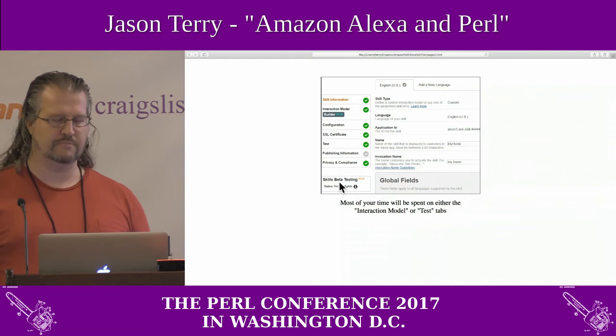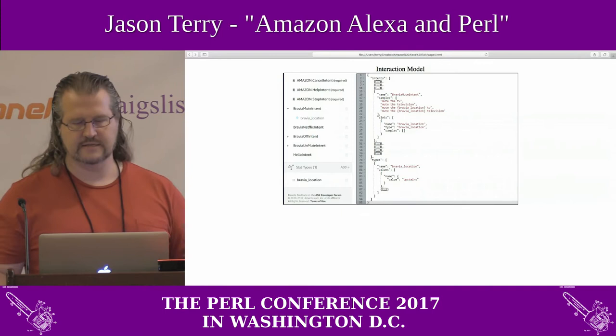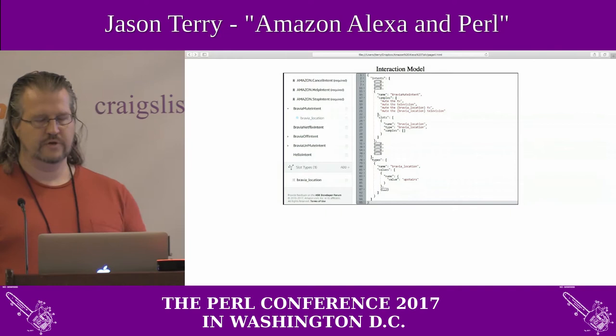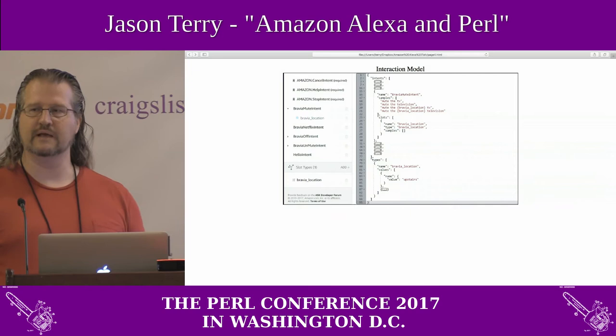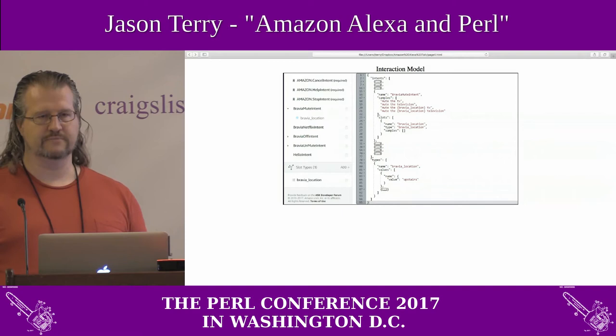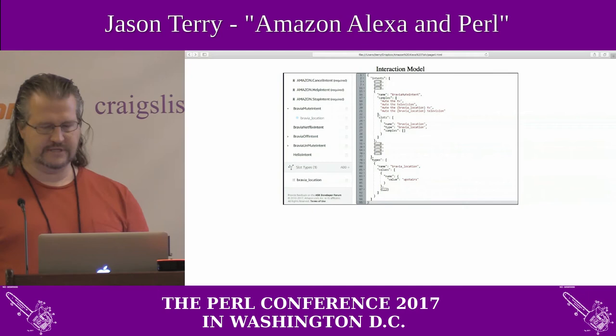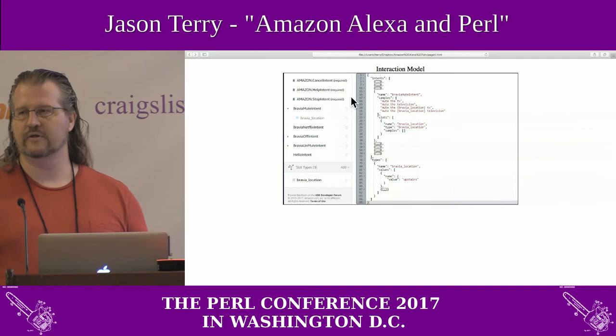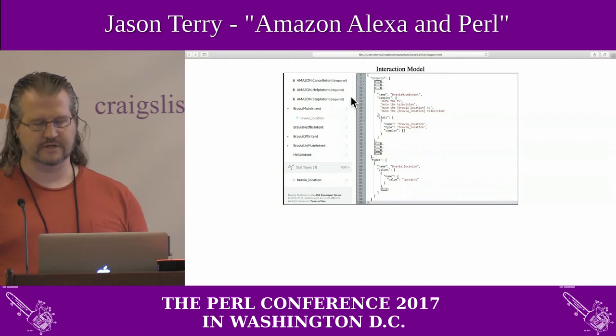Shortly after I started working on this talk, they introduced the new beta testing area, which mostly affects the interaction model, and that's this here. It's JSON. Literally, you can copy and paste in your commands that you want Alexa to be able to understand. In my case, all the commands would have to be prefixed with something like 'tell my home' or 'ask my home.' Here you can see I've configured it — I have a Sony Bravia television set, and I have configured it to be able to mute the TV.